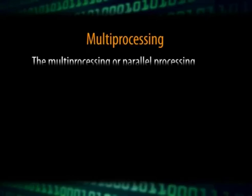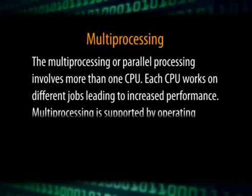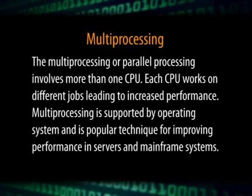The next technique to improve processing power is to have more than one processor in a computer system, a technique called multiprocessing or parallel processing. Multiprocessing involves more than one CPU, with each CPU working on different jobs, leading to increased performance and throughput. Multiprocessing is supported by the operating system and is a popular technique for improving performance in servers and mainframe systems. The presence of multiple cores in a single CPU nowadays also enables multiprocessing on a desktop system.